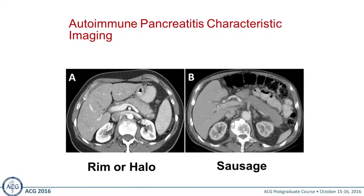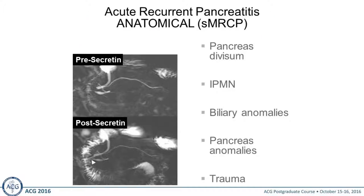On imaging, this is a picture of a person showing inflammation around the pancreas — it's boggy with a rim or halo. This is the classic sausage pancreas, which is a term I dislike because it gets used a lot by radiologists, but it is not specific for AIP — it can be other things.